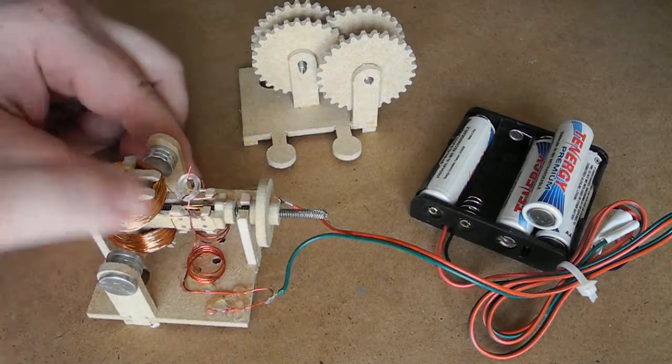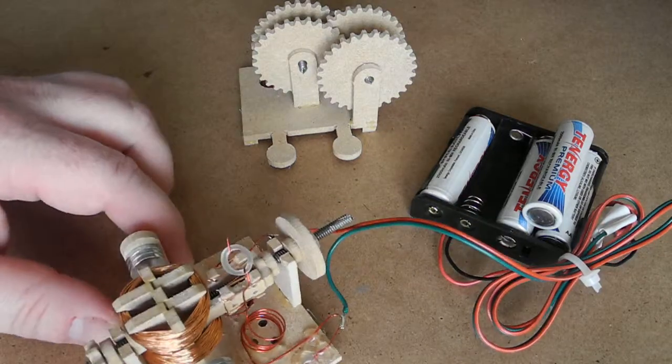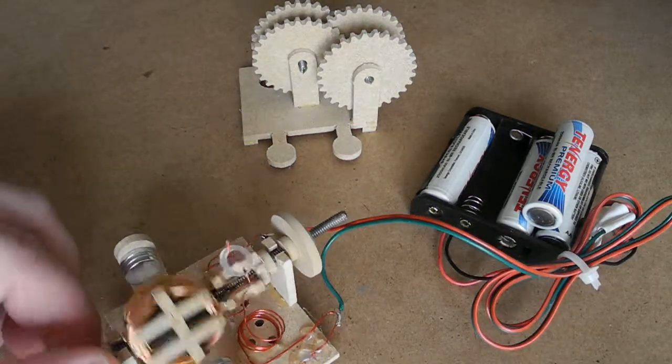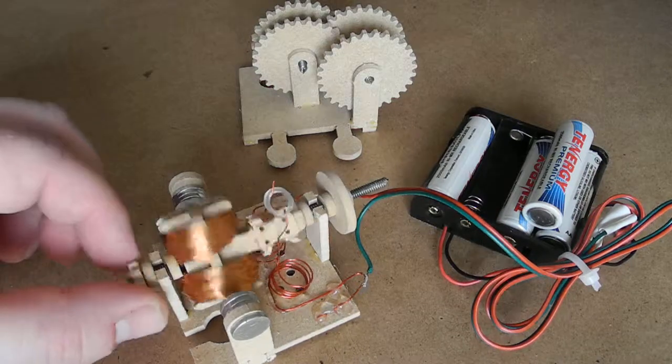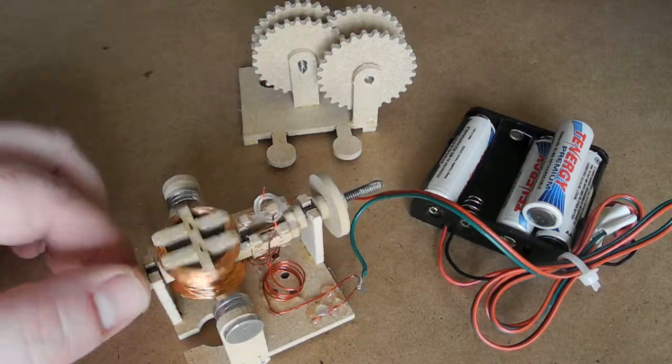There's a plastic loop at the top which is used as a brush tensioner so that allows the motor to turn very freely yet the brushes are making very good contact.